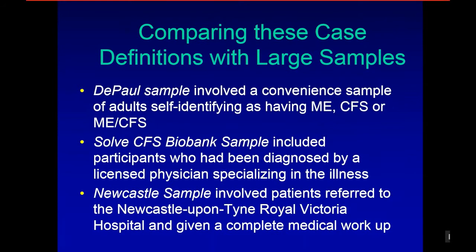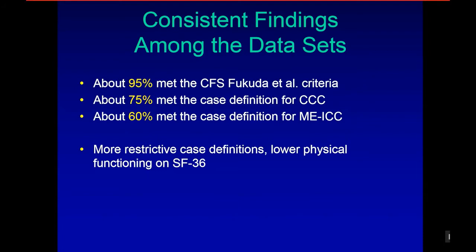We have compared case definitions with large samples from our DePaul sample, a Solve CFS Biobank sample, Newcastle sample, and samples from Norway. Consistent findings across data sets: about 95% meet the Fukuda criteria, 75% meet the CCC criteria, 60% meet the ME ICC. More restrictive case definitions also have lower physical functioning on the SF-36. These are consistent findings across quite a few different data sets.